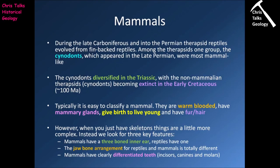Now let's move on to the mammals. During the late Carboniferous and into the Permian, we see the appearance of the therapsid reptiles — a group of mammalian-like reptiles who evolved from the finned-back reptiles, or the group we refer to as the pelycosaurs. Among the therapsids, one group in particular, the cynodonts, who appeared in the late Permian, were by far the most mammal-like. The cynodonts make it through the Permian-Triassic mass extinction, and as they enter the Triassic they diversify very quickly.